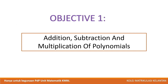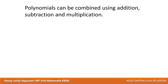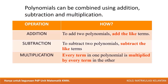Objective 1: addition, subtraction, and multiplication of polynomials. Polynomials can be combined using addition, subtraction, and multiplication. For addition and subtraction, we add or subtract the like terms of two or more polynomials. Like terms means the terms have the same variable. For example, x squared will be operated with x squared only, and constant with constant. For multiplication, every term in one polynomial is multiplied by every term in the other.